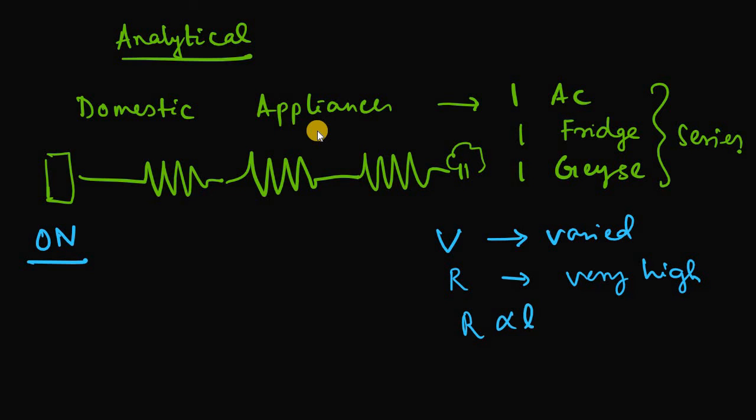R will be very very high and we know R depends on length of the wire, area of cross section of the wire and the temperature constant is also there, temperature coefficient. So if these things are involved can we afford to start all the things at once? No we cannot. So this is the disadvantage of connecting all the domestic appliances to one switch.